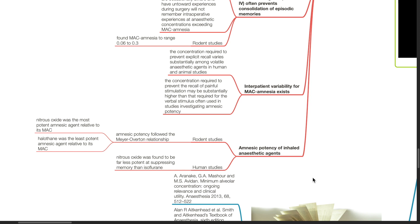Amnesic potency of inhaled anesthetic agents in rodent studies found that amnesic potency followed the Meyer-Overton relationship where nitrous oxide was the most potent amnesic agent relative to its MAC and halothane was the least potent amnesic agent relative to its MAC.